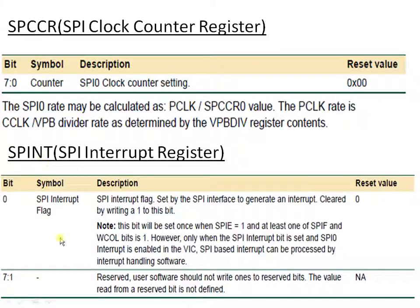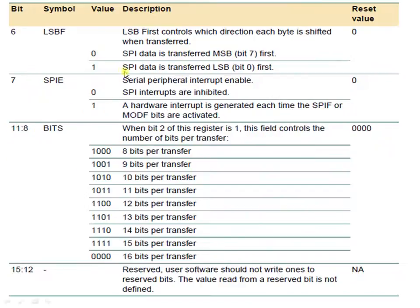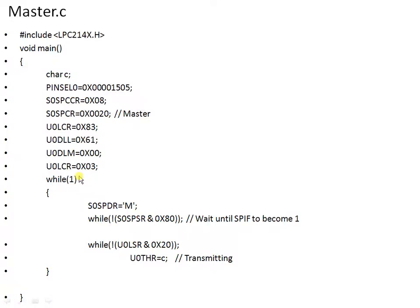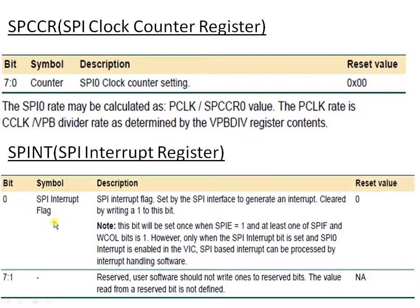The SPI INT register contains the interrupt flag. Whenever transmission or receiving is completed, this flag becomes 1, indicating an interrupt has been generated. If this becomes 1 and we have enabled SPIE (the interrupt enable bit in SPCR), then the processor will immediately execute the ISR related to the SPI peripheral.